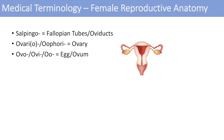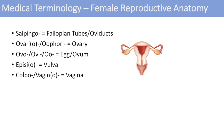The next one is ovo, ovi, or oo, which denotes the egg or the ovum. You can think of the oocyte — the egg cell — or the oviducts, the ducts for the egg to travel through. The next one is episio, which denotes the vulva. The next one is culpo or vagino, which denotes the vagina. The next one is cervico, which denotes the cervix of the uterus — you can think of cervical cancer.